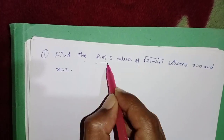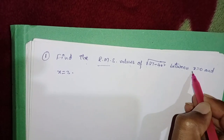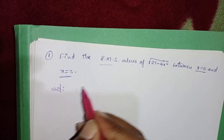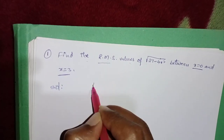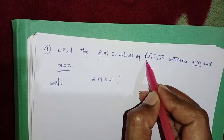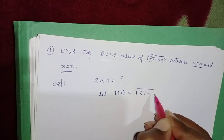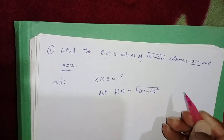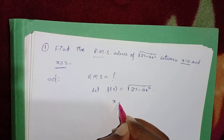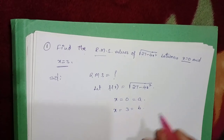Find the RMS value of f(x) = √(27 - 4x²) between x = 0 and x = 3. Here we have to find the RMS value. The given function is f(x) = √(27 - 4x²) and the limits are x = 0, which is called 'a', and x = 3, which is 'b'.